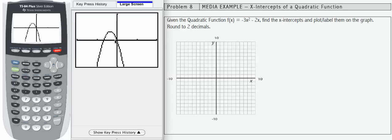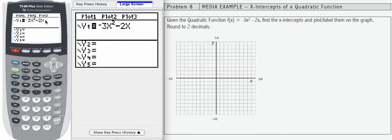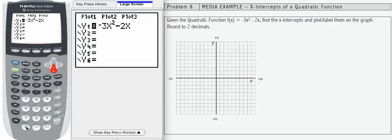Let's follow our process to do that. First, in our y equals, we have our function entered for y1. In y2, we want to enter 0. We're going to find the intersection between negative 3x squared minus 2x and 0.